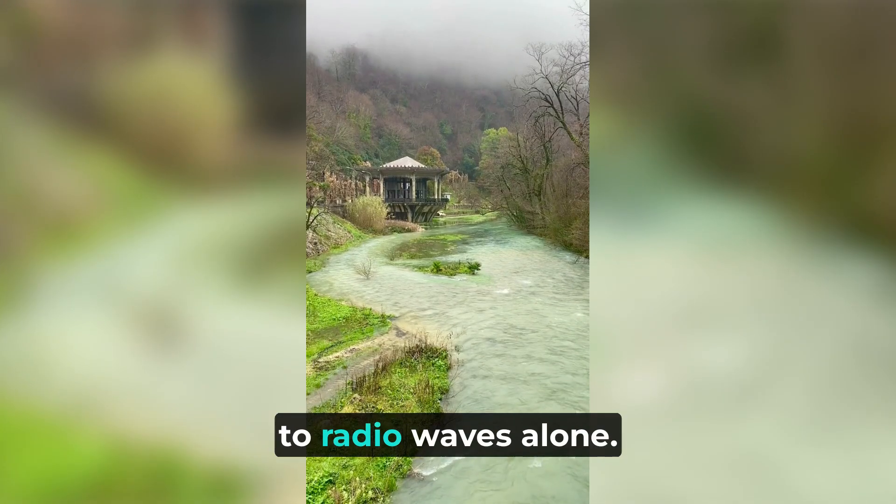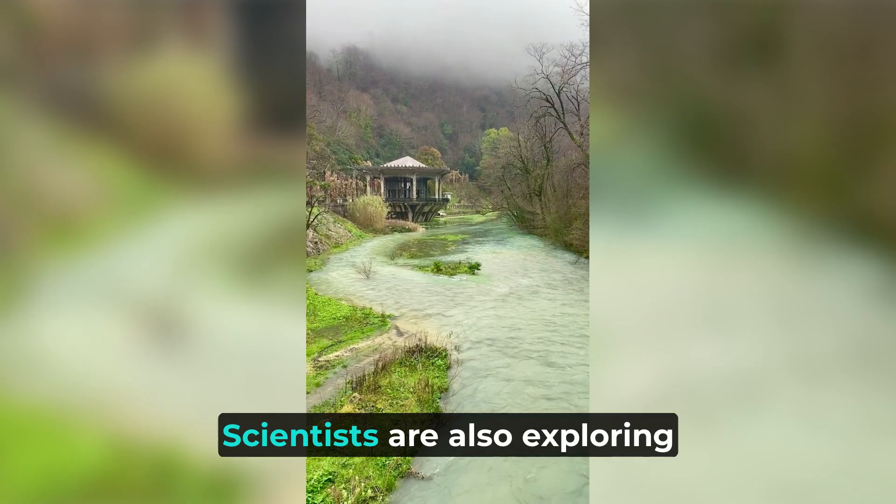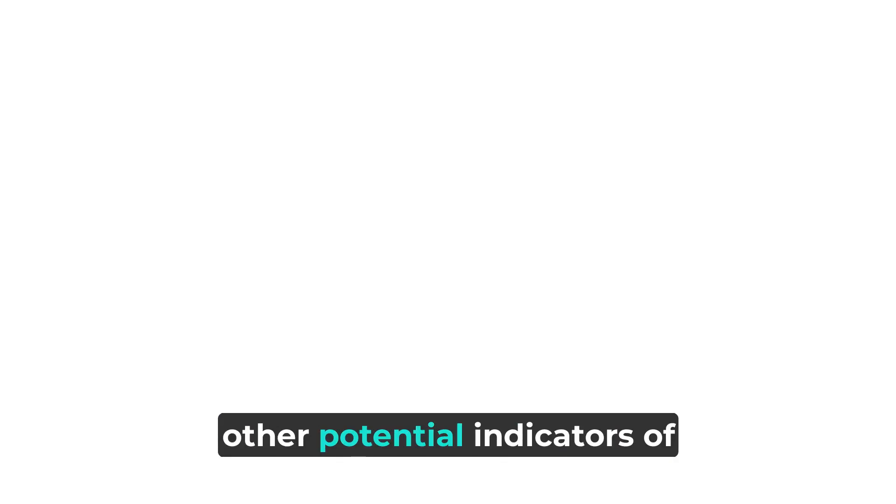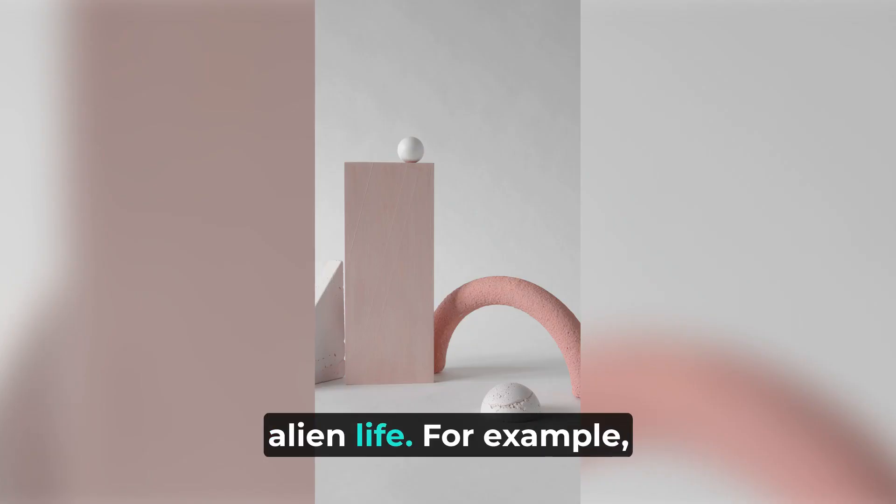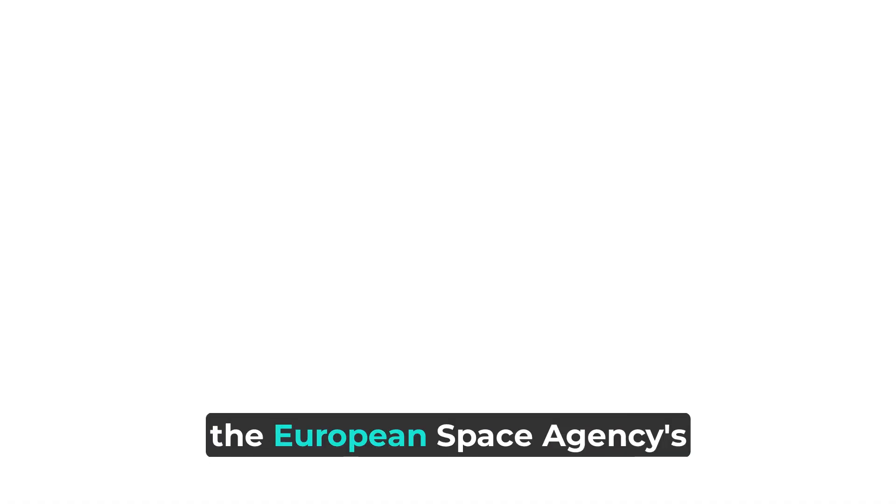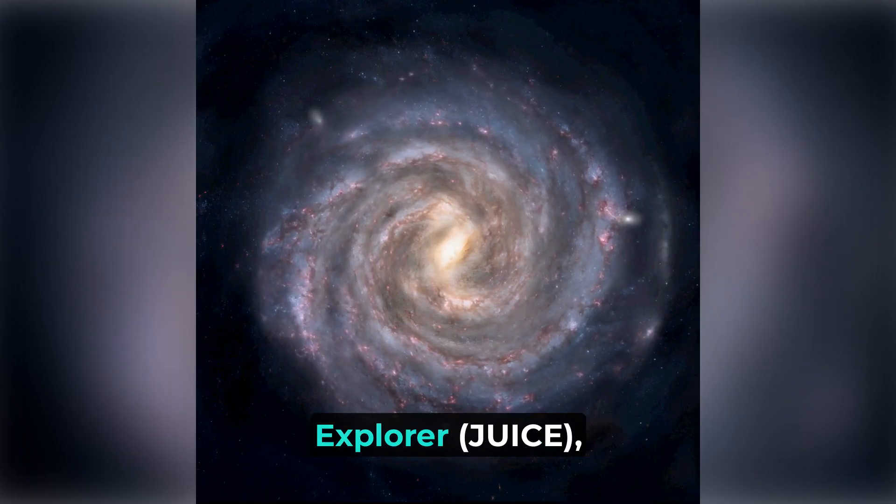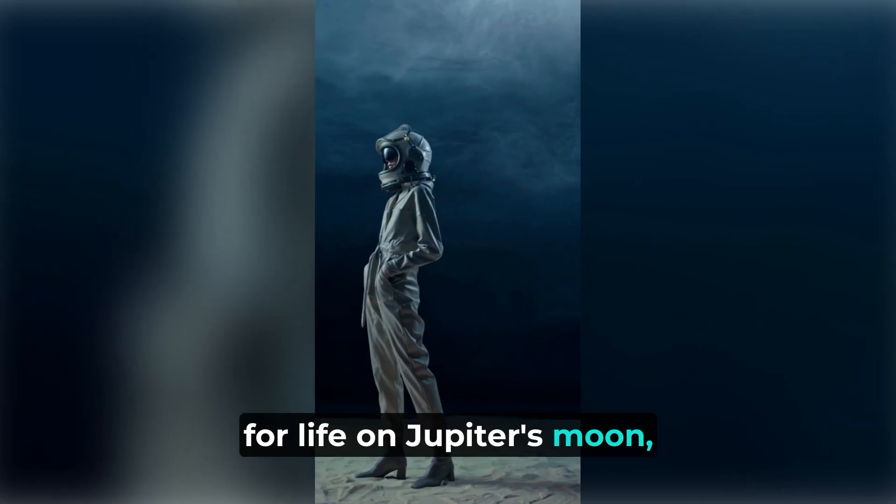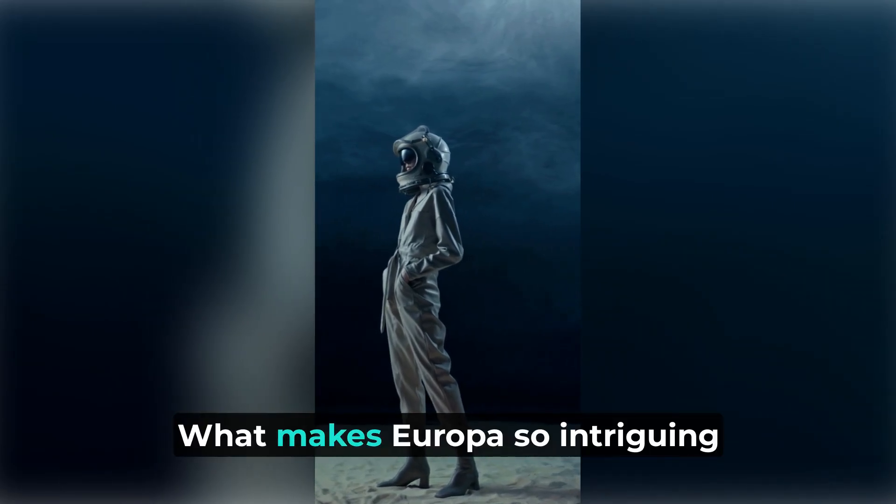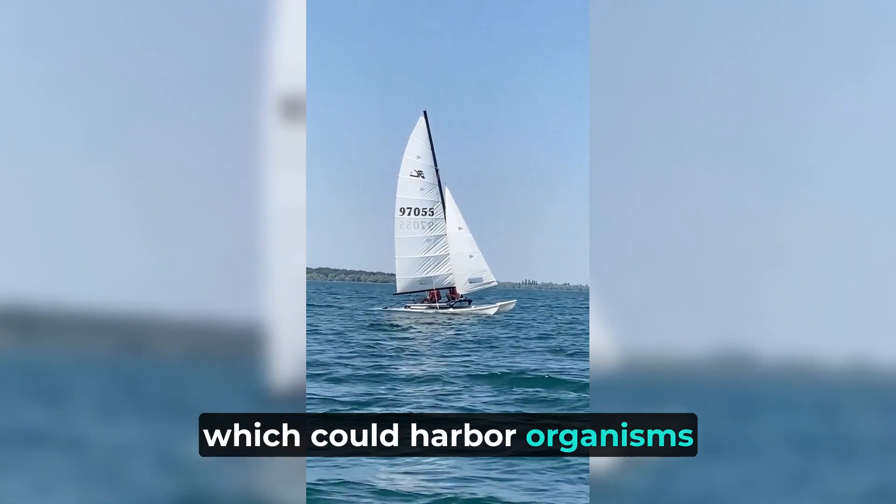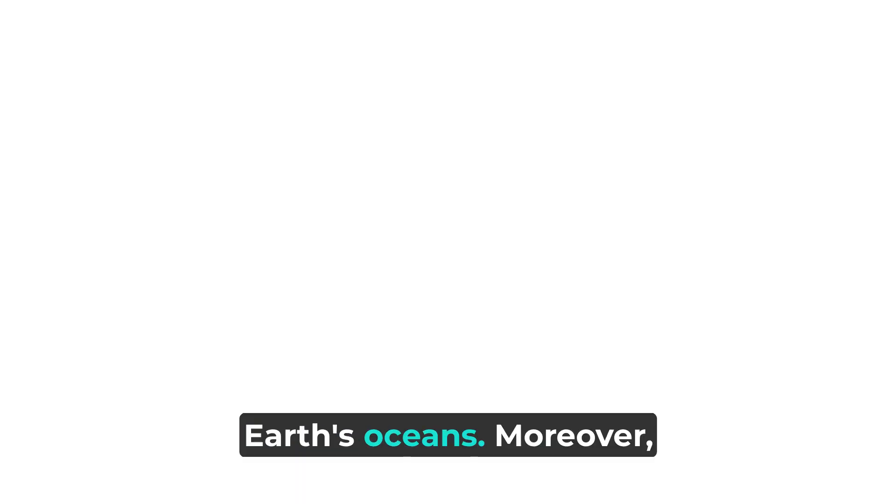But let's not limit our search to radio waves alone. Scientists are also exploring other potential indicators of alien life. For example, the European Space Agency's upcoming mission, the Jupiter Icy Moons Explorer, JUICE, will investigate the potential for life on Jupiter's moon, Europa. What makes Europa so intriguing is its subsurface ocean, which could harbor organisms similar to those found in Earth's oceans.